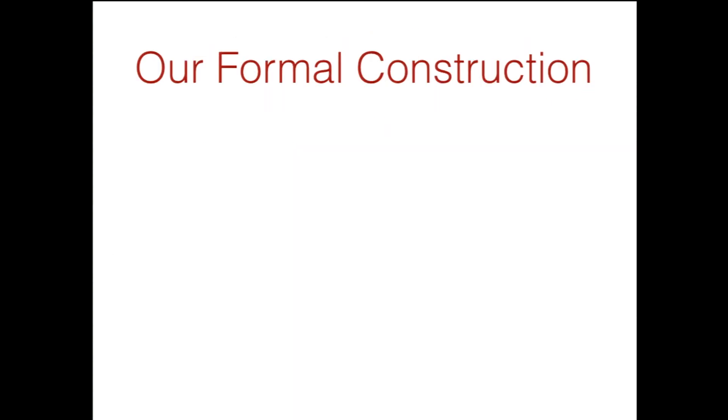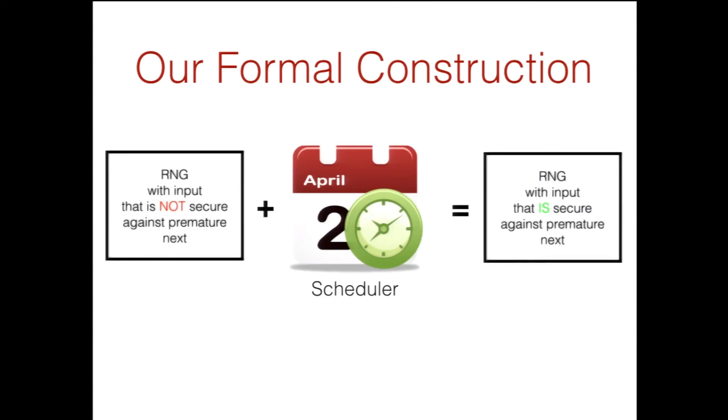So here's our formal construction, which is essentially a generalization of the Fortuna model. We take an RNG with input that is not secure against premature next, we combine it with an object called a scheduler, and we get an RNG with input that is secure against premature next. So a scheduler is something that decides when pools should be filled and emptied, as I showed you earlier. I'll describe this in much more depth in a second. An RNG with input that's not secure against premature next, we can just use Dotis et al.'s construction.